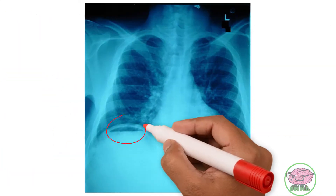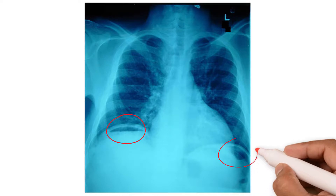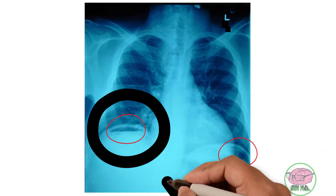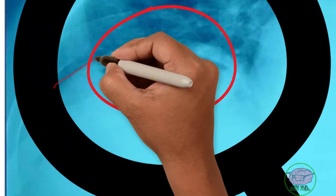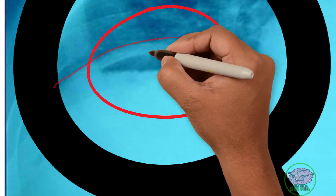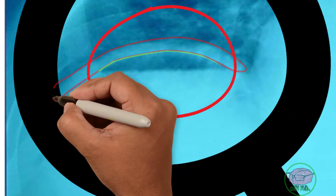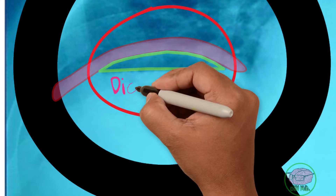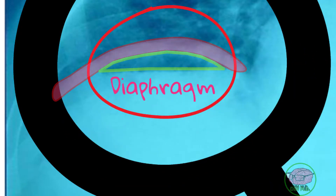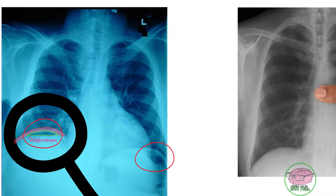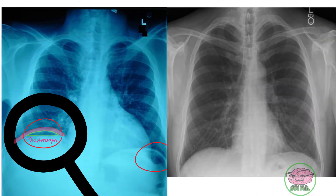The chest x-ray of the patient shows a black area. Zooming in, we can see a white area below the black area — this is the diaphragm. Comparing with a normal x-ray, there is usually white below the diaphragm, so the presence of this black area is not normal.